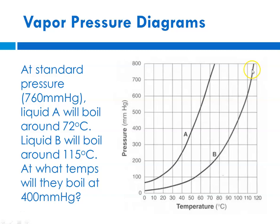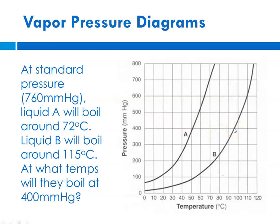For liquid B at standard pressure, 760 mmHg, reading across and down, it looks like it's about halfway between 110 and 120°C. At 400 mmHg pressure, liquid A would boil at about 52°C, and liquid B would boil at about 95°C. This shows what the vapor pressure of each liquid is at various temperatures.